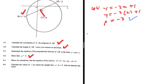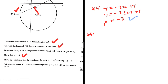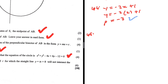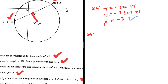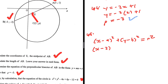In 4.5, show by calculation that the equation of the circle is X squared plus Y squared minus 4X plus 6Y minus 12 equals 0. We know we can write the equation of a circle in the form (X minus A) squared plus (Y minus B) squared equals R squared. In our case, with center at (2, -3), we have (X minus 2) squared plus (Y plus 3) squared equals R squared.